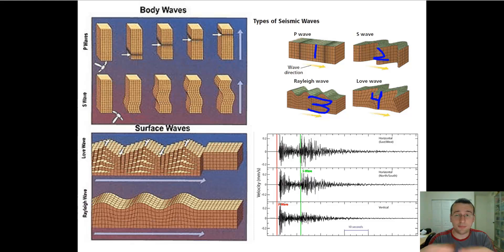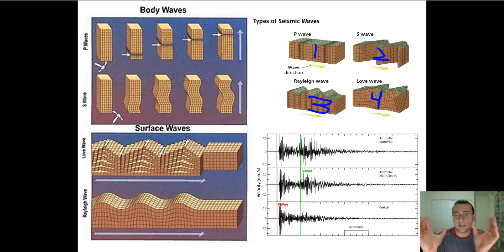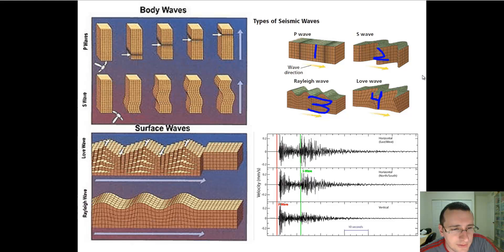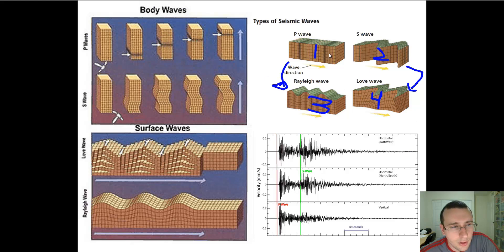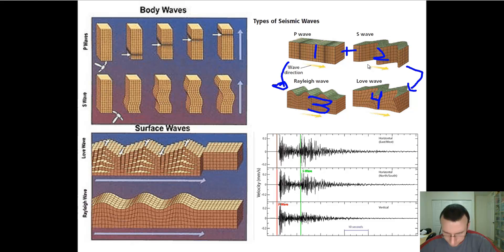For buildings, Love waves are very problematic because the buildings don't know how to deal with that kind of stress in all different directions. The Love wave is most affected by S waves, while the Rayleigh wave is more affected by P waves — so when they hit the surface, the P waves become Rayleigh and the S waves become Love. But actually both surface waves are a combination of P waves and S waves as they hit the surface.